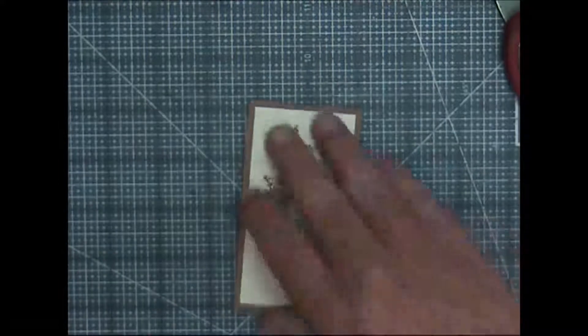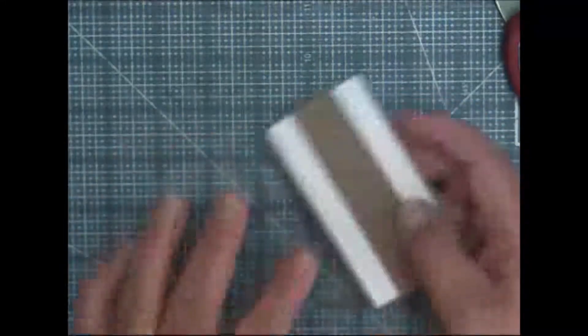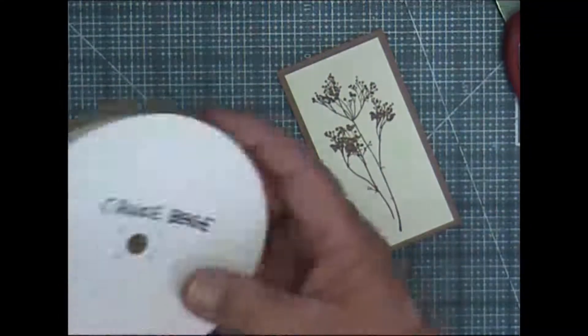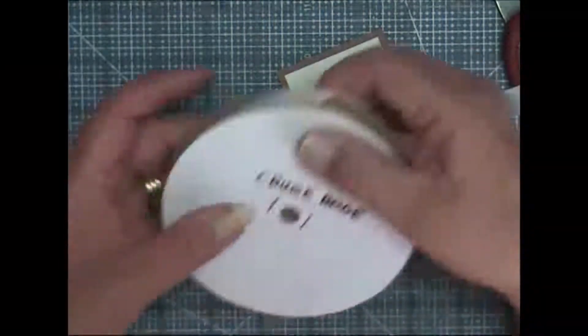Before I apply the double-sided tape to the back of that, I'm going to tie a bow using some Crumb Cake seam binding.